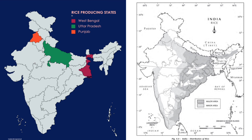First are rice producing states. There are two maps here — first showing the leading producers which are the three main leading states, and the other map shows major and minor areas in terms of rice production. Rice producing leading states are West Bengal, Uttar Pradesh and Punjab, of which West Bengal will be the most perfect answer if the question arises of the leading rice producing state.